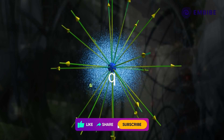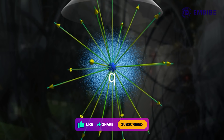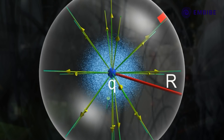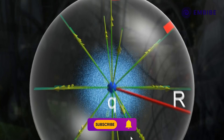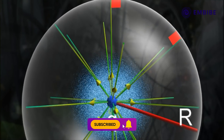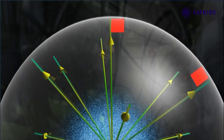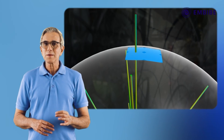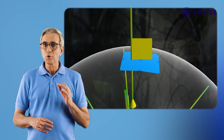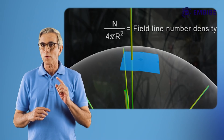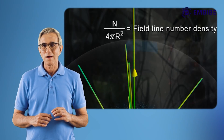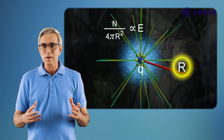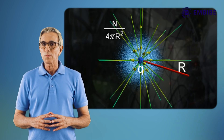Let this number be n. If the lines are drawn by taking charge q at the center of a sphere of radius r, the number of electric field lines perpendicular to the surface of the sphere will be equal to n. Therefore, the number of electric field lines passing perpendicularly through a unit surface area of the sphere is n upon 4πr².